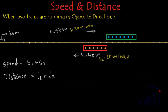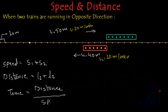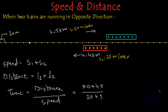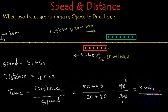So how much time will they take to cross each other completely? Time equals distance divided by speed. The distance is the sum of both their lengths: 50 plus 40 equals 90 meters. The speed when running in opposite directions is the sum of both speeds: 20 plus 10 equals 30 meters per minute. So time equals 90 divided by 30, which equals 3 minutes. It will take 3 minutes for these two trains to cross each other completely.